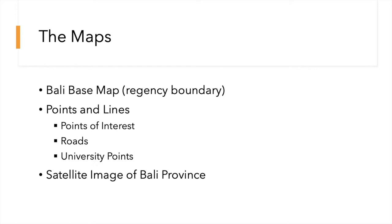Map data are also required to generate the thematic maps. The first map data needed is the base map of Bali with regency boundary associated with it. Secondly, factor layers such as points and lines are also required, which in this case consists of points of interest that includes tourism, shop, and amenities location points, road lines, and university location points. Thirdly, satellite image of Bali is also needed to provide an overview of the visual representation of Bali province.